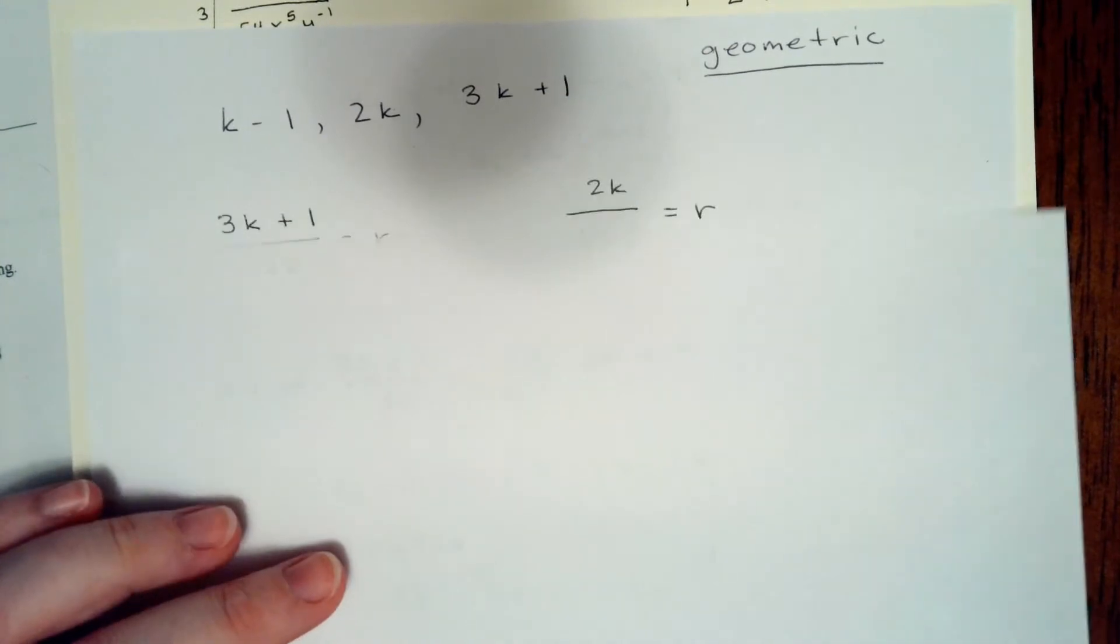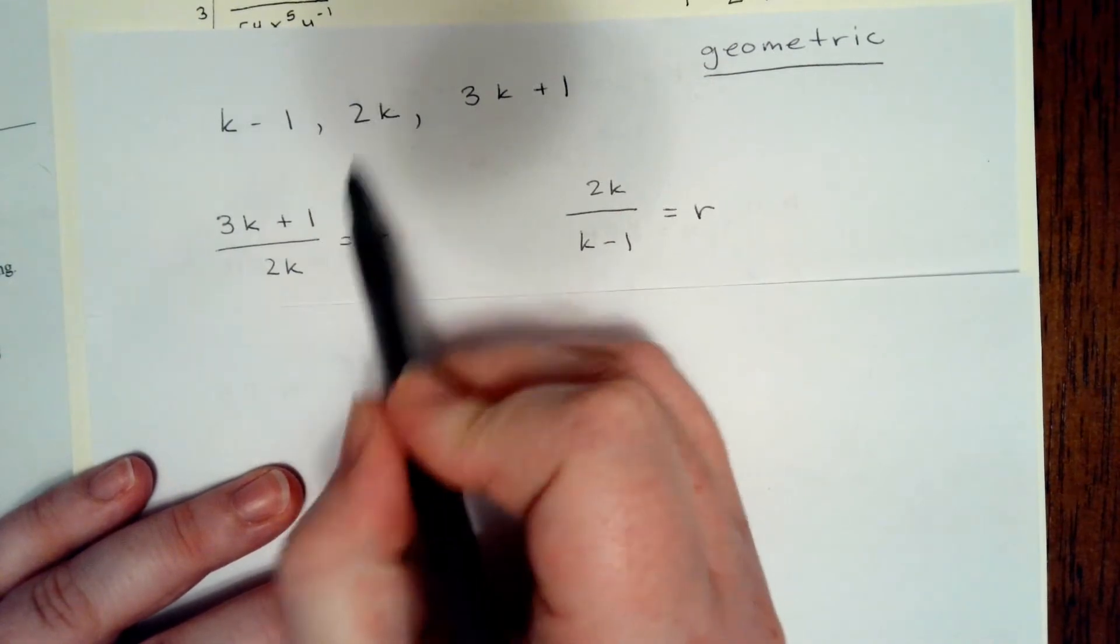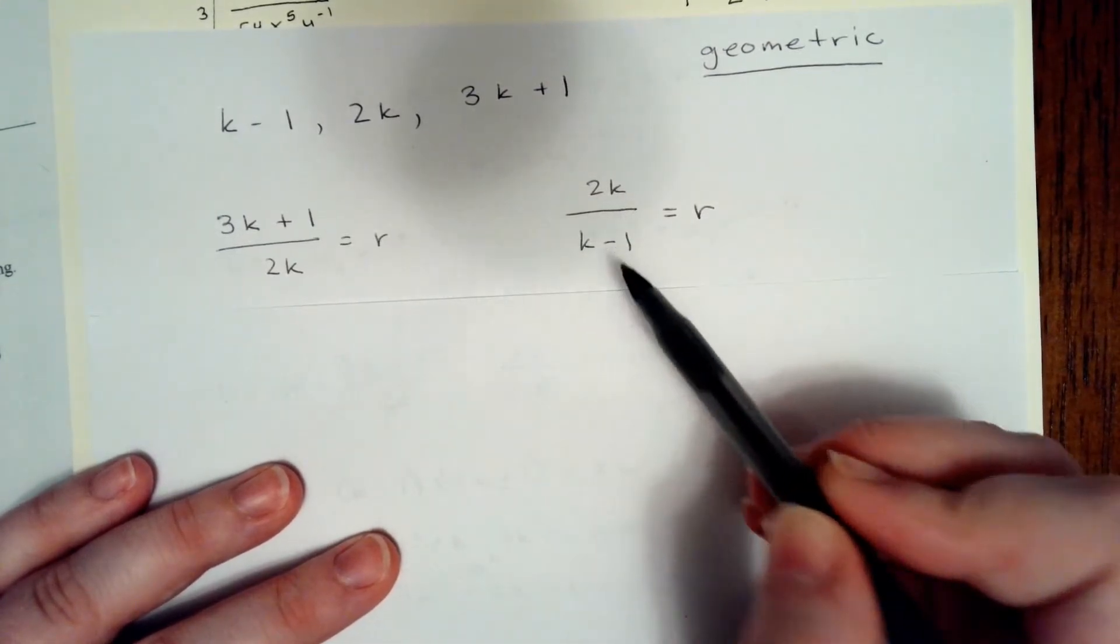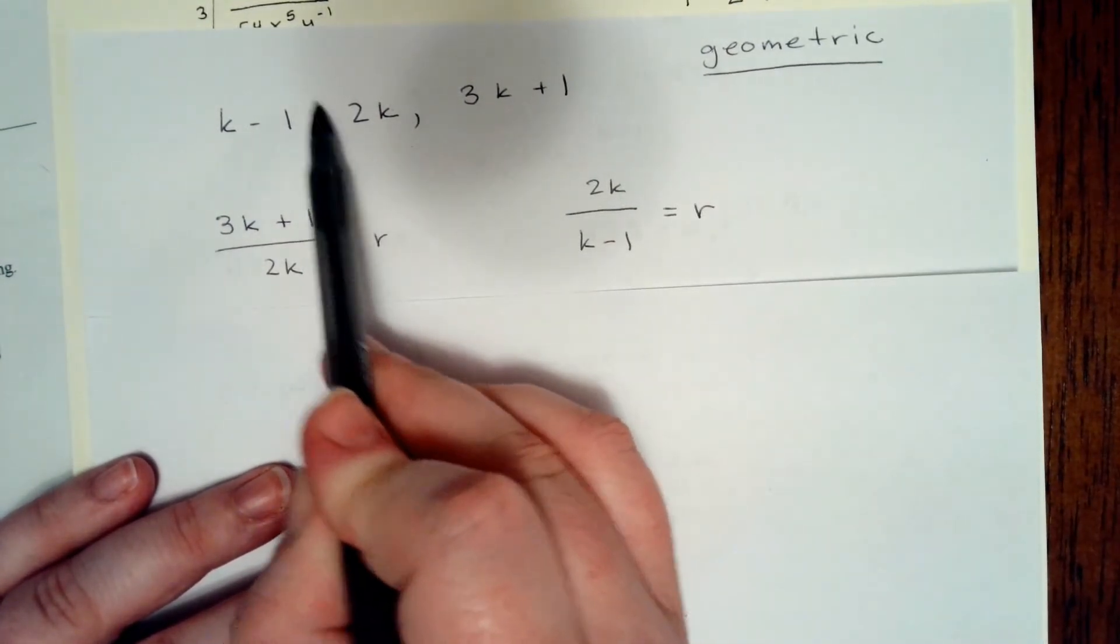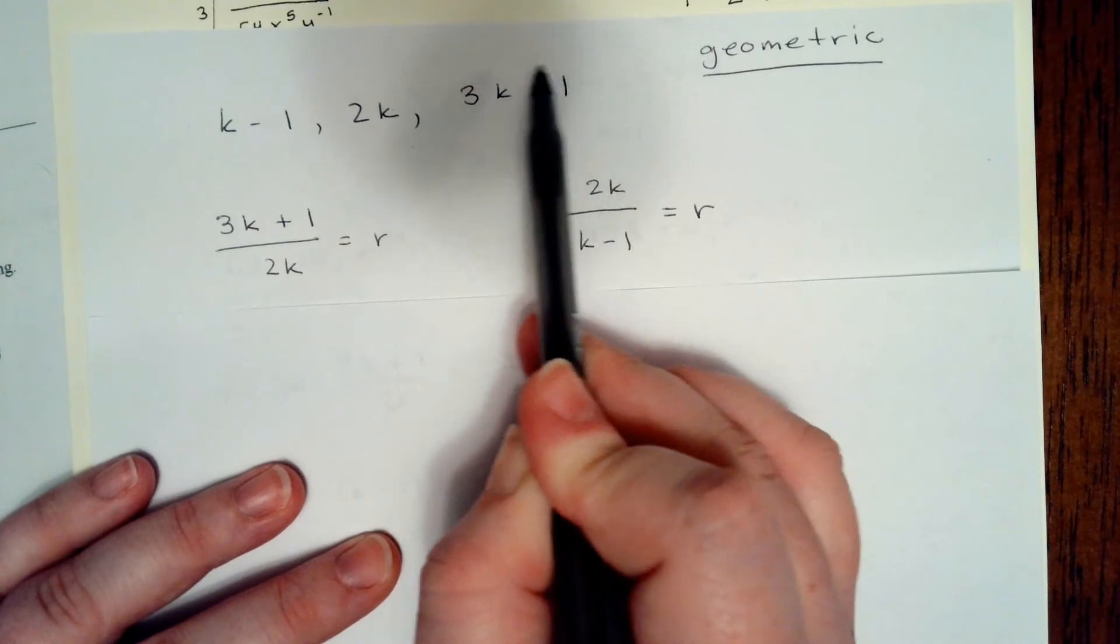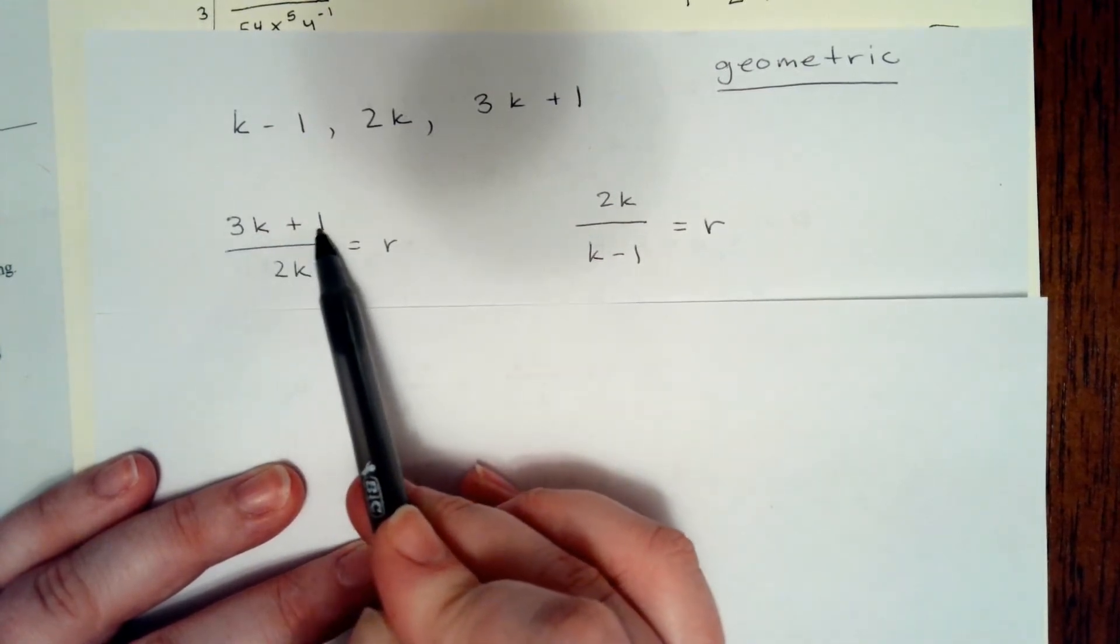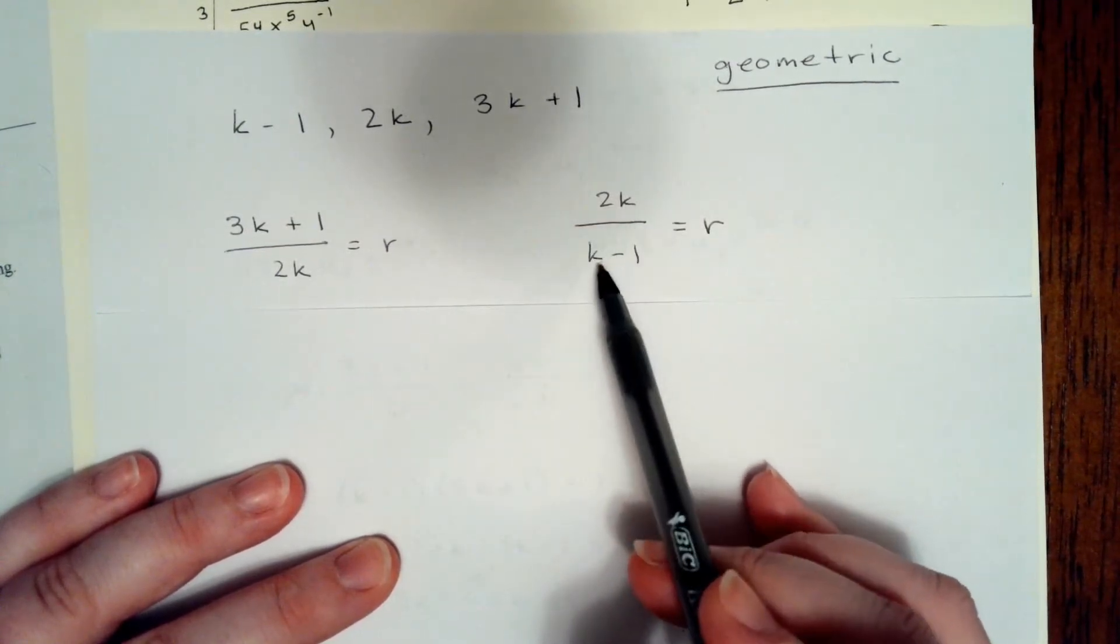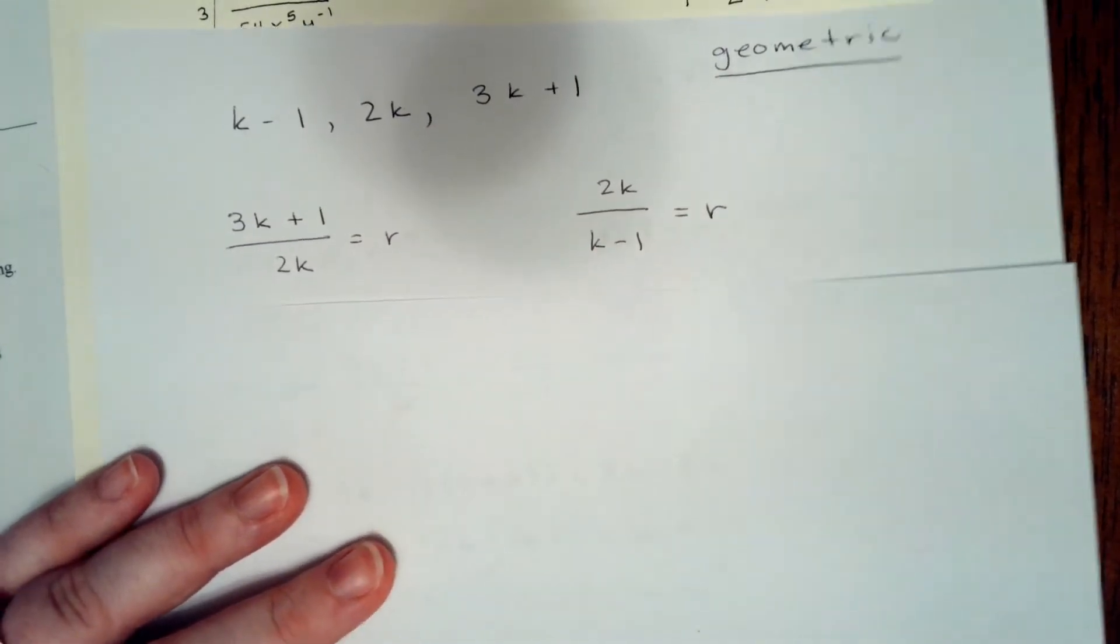To do this, we want to divide the third term by the second term. That gives us this here. And the second term by the first term, that gives us this. We know we can do that because the ratio between term 1 and term 2 is the same as the ratio between term 2 and term 3. So if we divide that third term, 3k plus 1, divided by 2k, and that second term, 2k, by the first, k minus 1, both of those give us a ratio of difference between those problems.